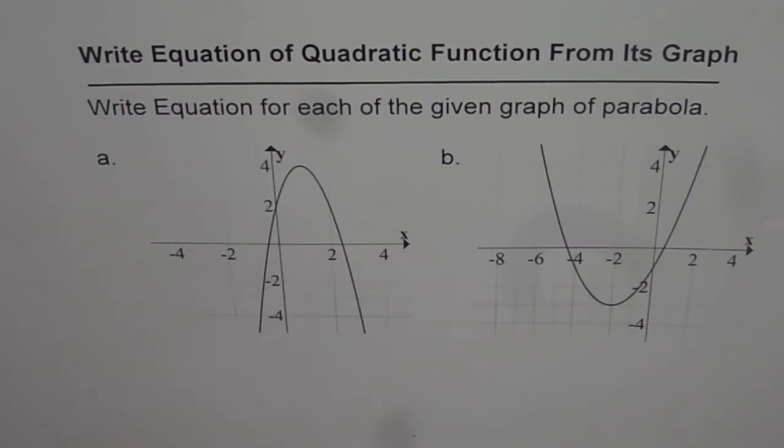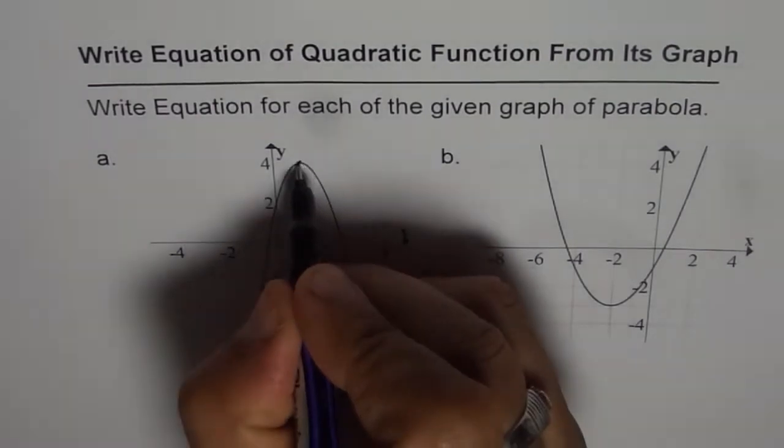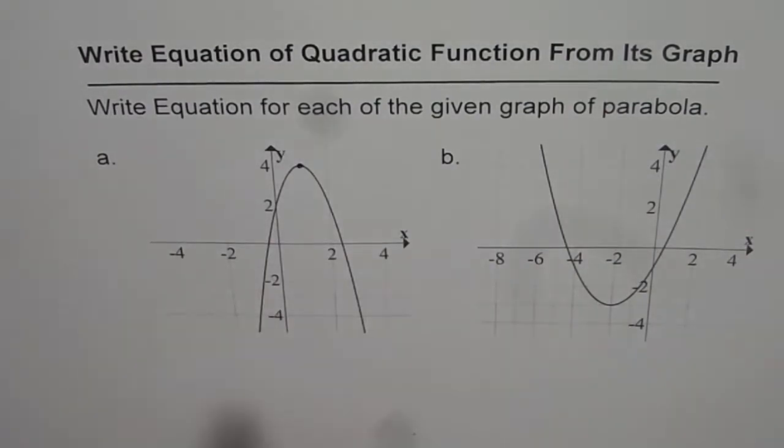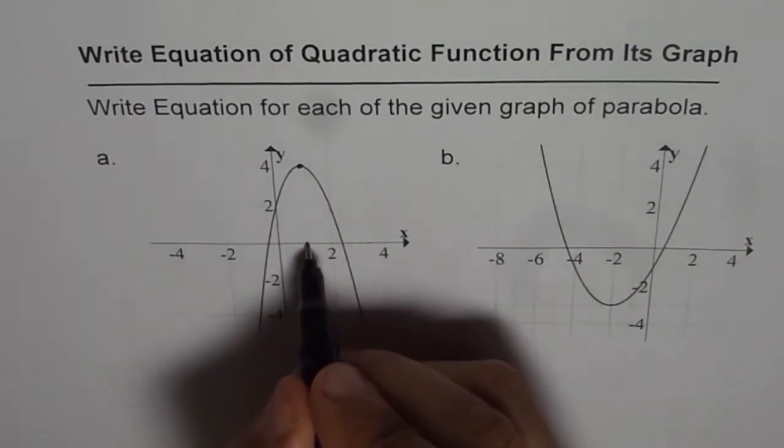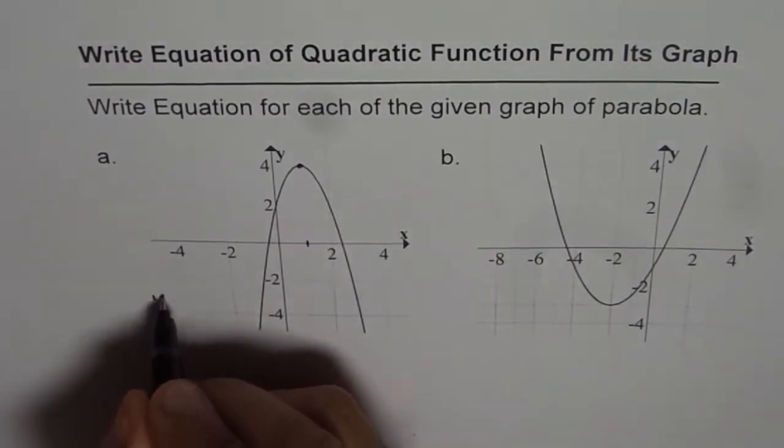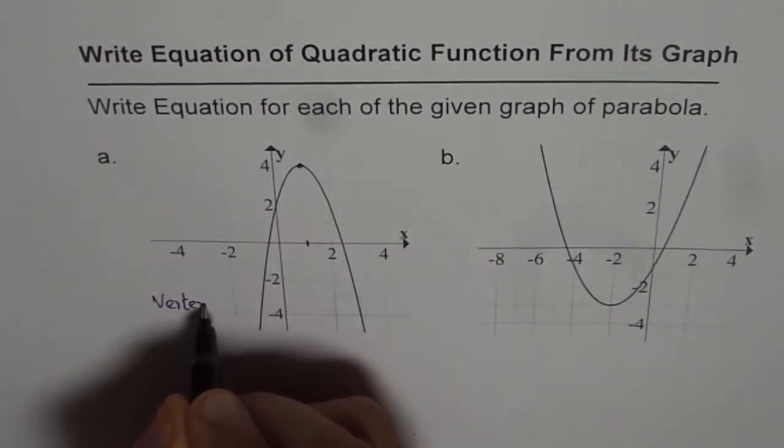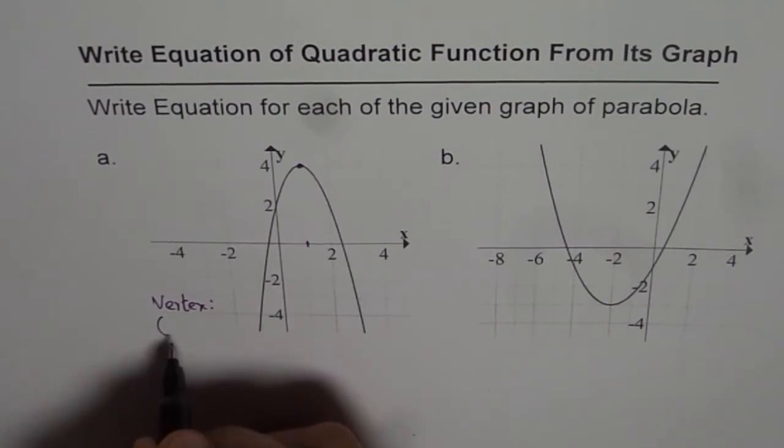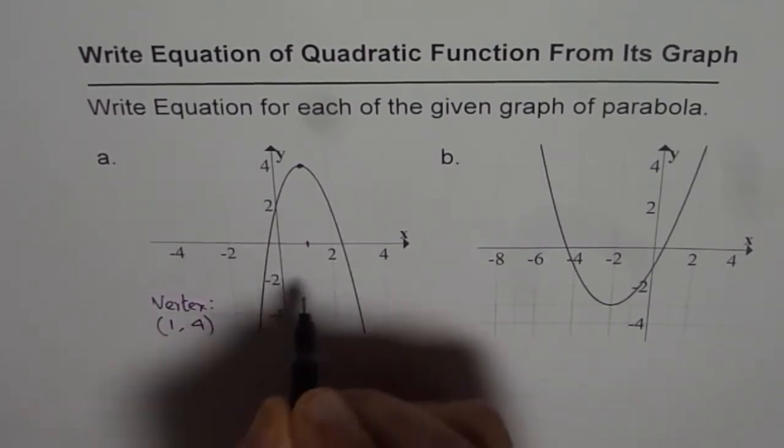The technique here is first find out the point of vertex. So in this first one, we have vertex at 1, 4. So the coordinate of the vertex is (1, 4).